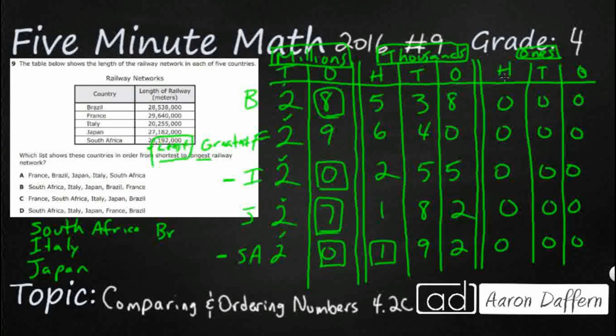And so let's find which one matches that. We've got South Africa, D and B have that. Italy, yes for D and B. Japan, yes. And the two differences are Brazil and France, and the one that gets it correct is here, B.